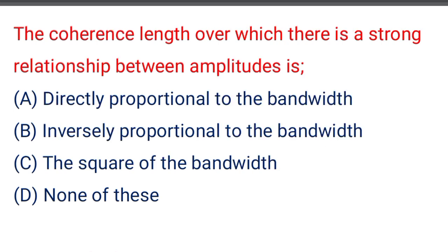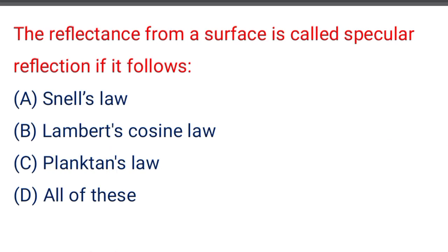Next question: the coherence length over which there is a strong relationship between amplitude is — option A: directly proportional to the bandwidth, option B: inversely proportional to the bandwidth, option C: the square of the bandwidth, option D: none of the above. The correct answer is option B: inversely proportional to the bandwidth.